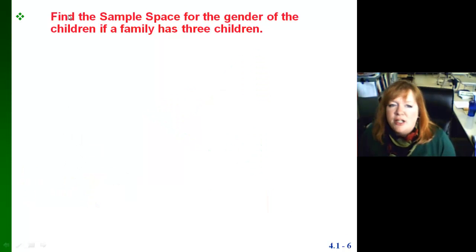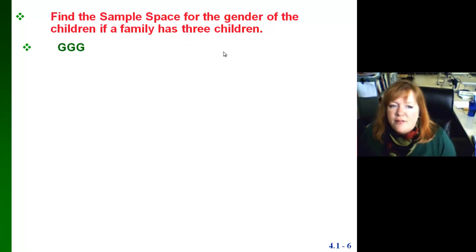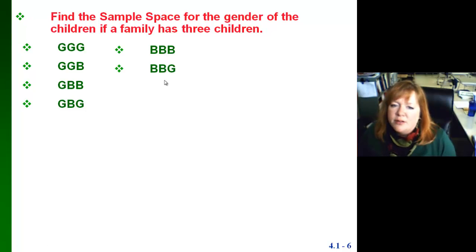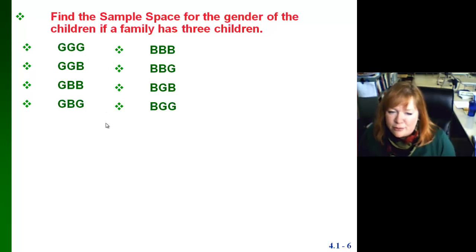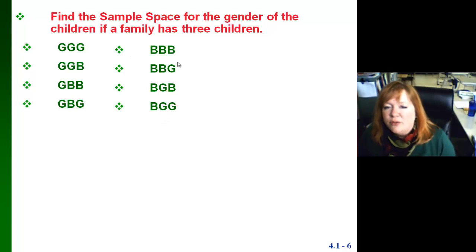Find the sample space for the gender of the children if a family has three children. You could have all girls, two girls and a boy, a girl and two boys, a girl-boy-girl, three boys, boy-boy-girl, boy-girl-boy, or boy-girl-girl. You can do that in your head or use a tree diagram. We know there are going to be eight possible outcomes in our sample space.